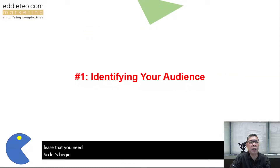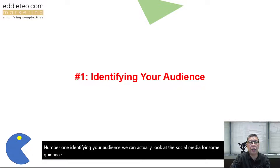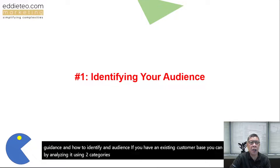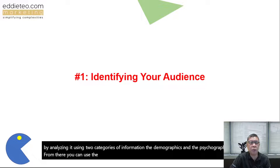Number one: identifying your audience. We can look at social media for guidance on how to identify an audience. If you have an existing customer base, you can begin by analyzing it using two categories of information — demographics and psychographics. From there, you can use information about the problems your products or services solve to narrow your search.